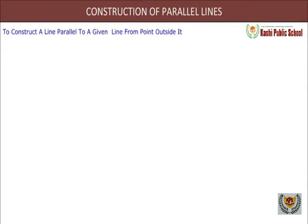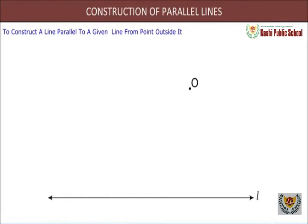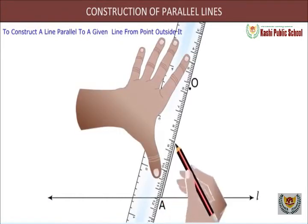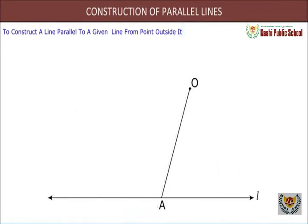Step 1: First, we take a line l and a point O outside l. Step 2: Now we take any point A on l and join A to O. Step 3: With A as center, taking some convenient radius, we draw an arc cutting the line l at C and OA at D.